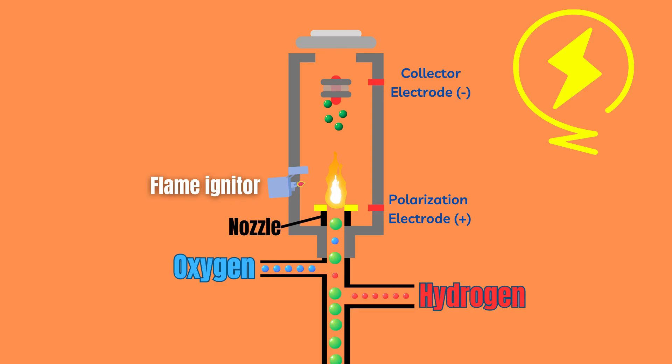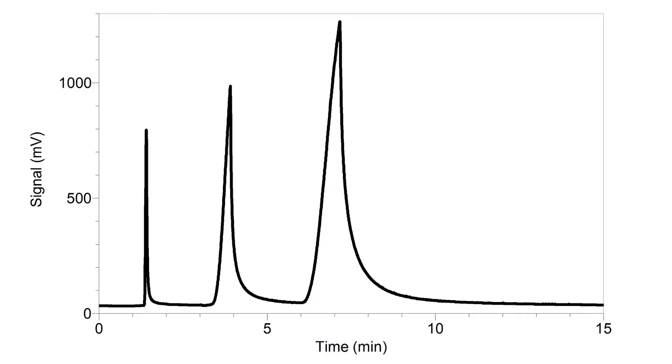The electrometer will produce a current between the electrodes that is proportional in size to the amount of organic compounds present. The signal will then be converted into a peak. The number of peaks present can indicate how many components exist in the mixture.